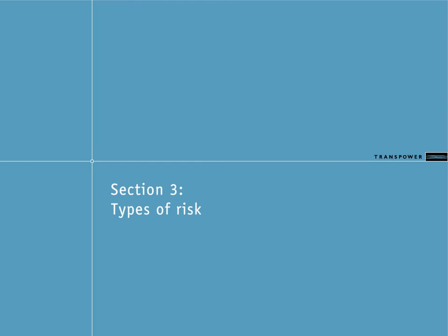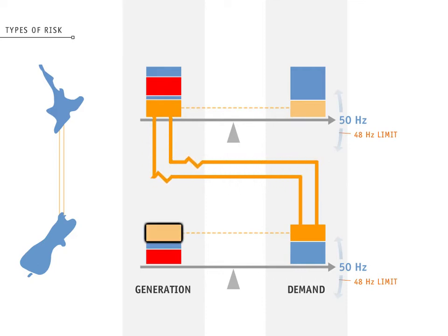The types of risk to the stability of the system that our reserve management tool is designed to work with are losing one or more generators in the North or South Islands, and losing some or all of the HVDC link between the islands. The South Island often generates extra power, which is used by the North Island.